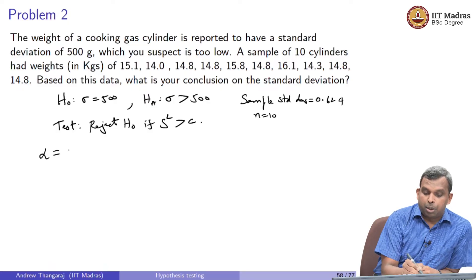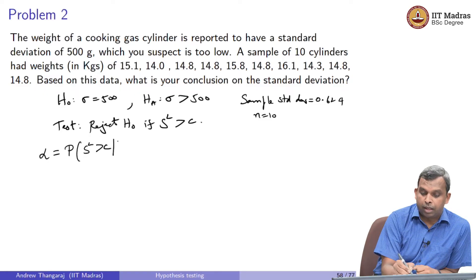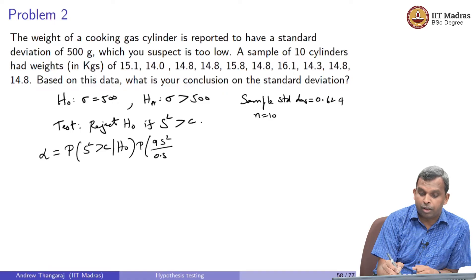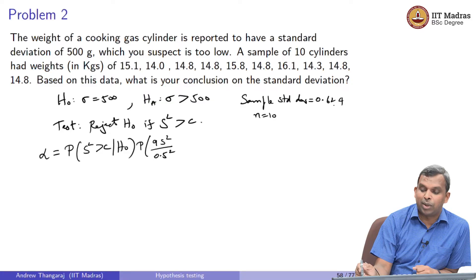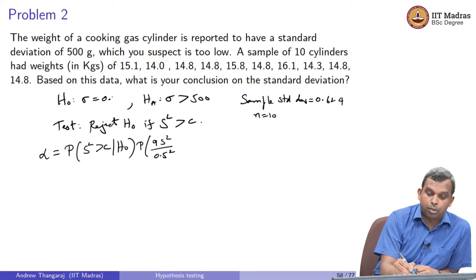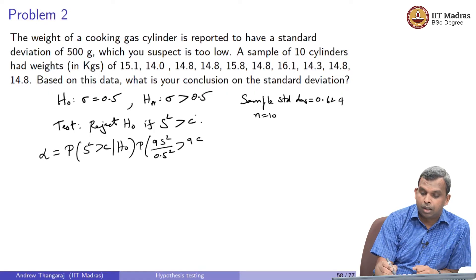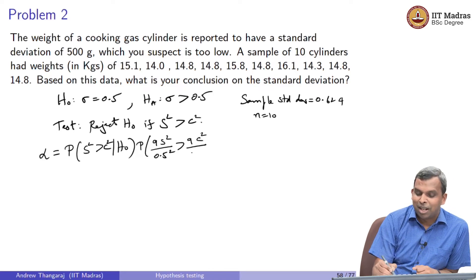Alpha equals the probability of s² being greater than c given H₀ — that is, given σ = 500 grams (or 0.5 kg). So you have the probability that (9 × s²) / (0.5²) is greater than (9 × c²) / (0.5²), which follows a chi-squared distribution with 9 degrees of freedom. This gives 1 − F_{χ²_9}(9c² / 0.5²) = α. We will keep units in kilograms throughout.